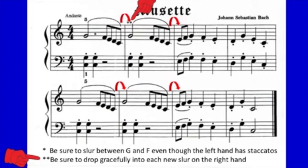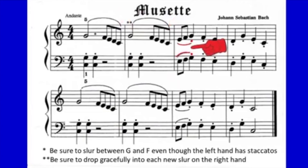At the beginning of measure two there are two asterisks. Look down to the bottom for the two asterisks and read: be sure to drop gracefully into each new slur on the right hand. We'll demonstrate in a minute. And then there's one more very important technique to learn in measure three — a slur that ends in a staccato. That means you slur all the way into the staccato and then push off.